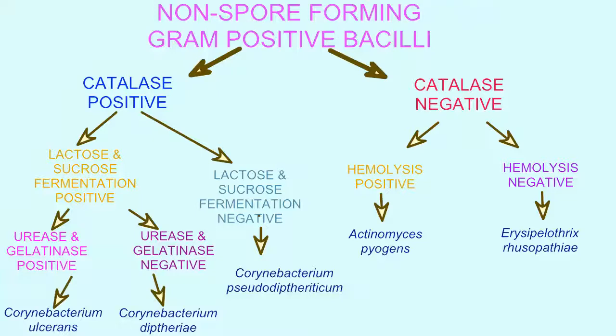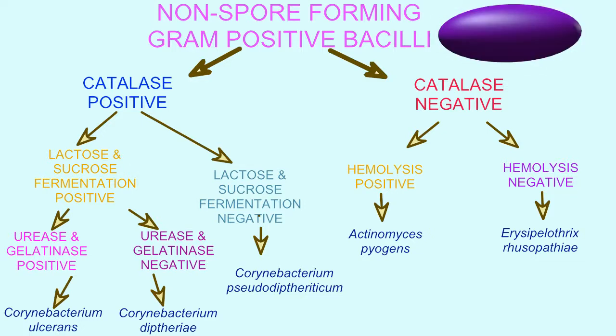If one were trying to identify an unknown bacterium, one could begin by performing the gram stain. Gram-positive bacteria would stain purple, while gram-negative bacteria would stain pink.